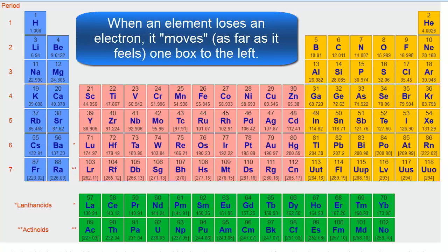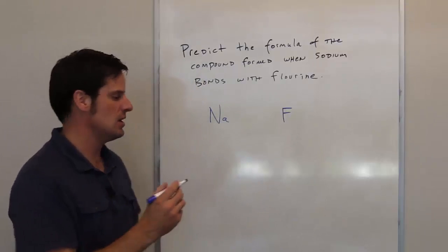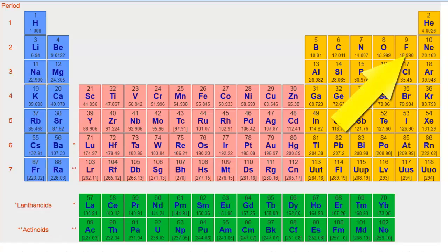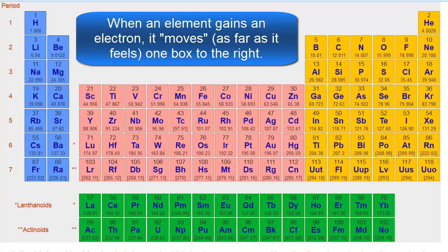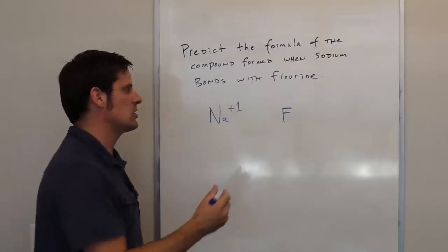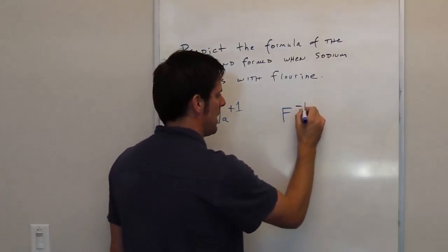Keep in mind that if an element loses electrons, it will move, as far as it feels at least, one box to the left for each electron that it loses. So sodium wants to have a plus one charge, which we'll write right here. Fluorine, on the other hand, is very close to neon, its nearest noble gas neighbor, but it needs to move to the right. So in order to feel like neon, it's going to have to move one position to the right, which means it's not going to lose electrons, it wants to gain electrons. So fluorine, in order to feel like neon, is going to want to gain one electron, so it's going to want to have a minus one charge.